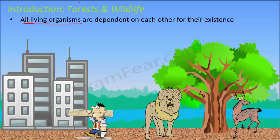When we talk about forests and wildlife, we are mostly going to talk about plants and animals. Both are equally important because together they maintain the balance of the most important gases in the atmosphere. Plants take in carbon dioxide and give out oxygen, whereas animals take in oxygen and give out carbon dioxide, creating a balance between living organisms on Earth.